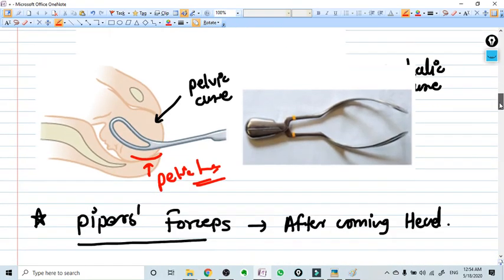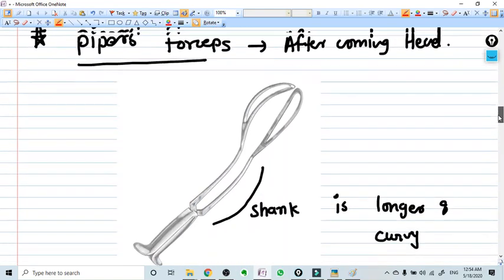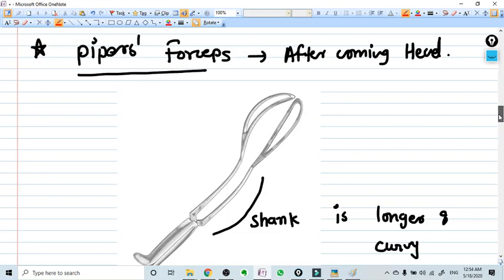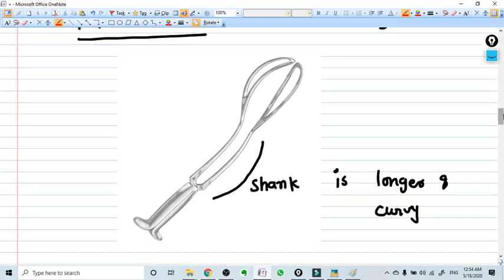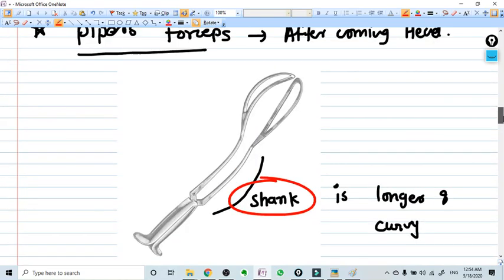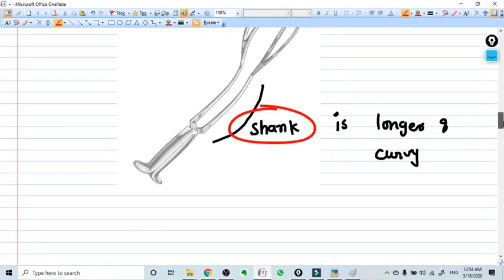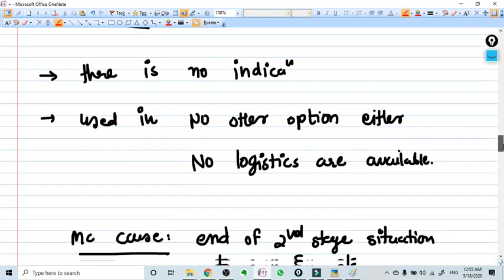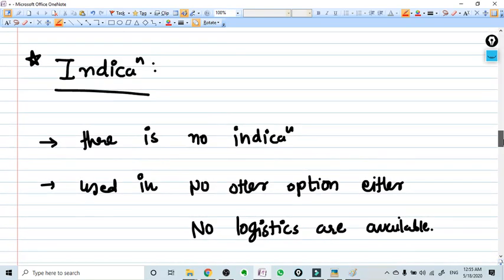Another forceps hardly used sometime is Piper's forceps. They are used for after-coming head of the breech delivery. And you remember why? Because the shank in this forceps is longer than the Wrigley's forceps. That's the only information you need to know about the forceps.